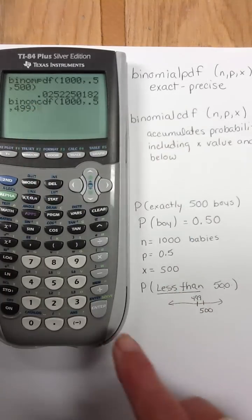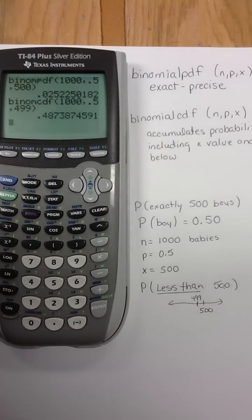Cumulative, we'll go 499 and below. And enter, here we have almost 50%, 0.487.